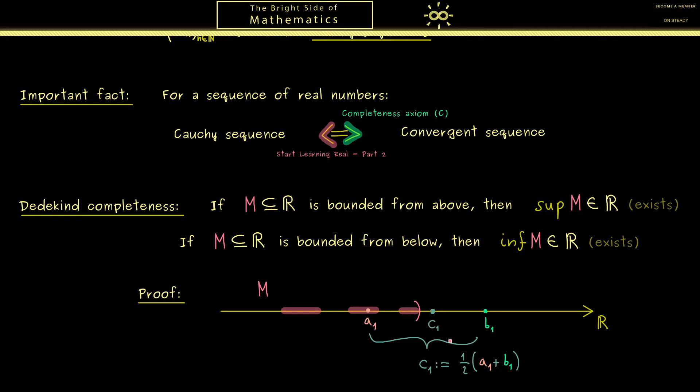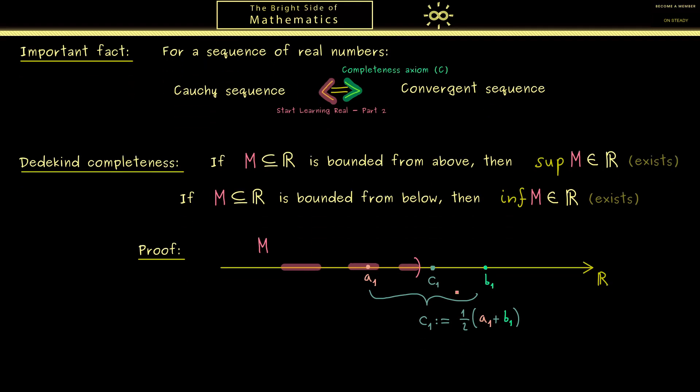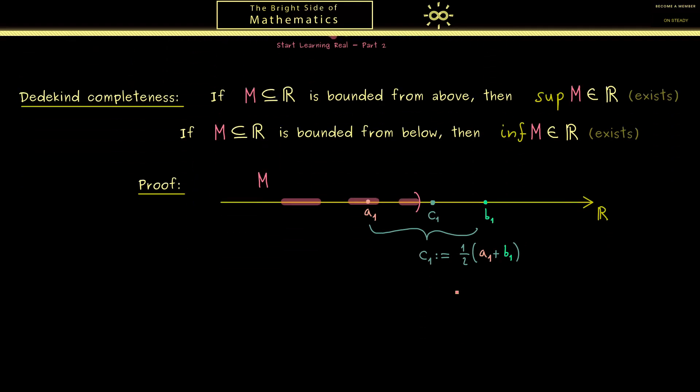Of course the idea is that by doing this calculation we get closer to this point which is the supremum of M in the picture. Therefore now I explain how we get the whole sequence which gives us an approximation of the supremum.